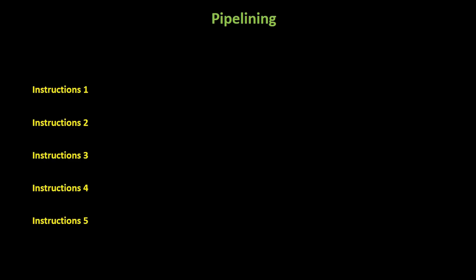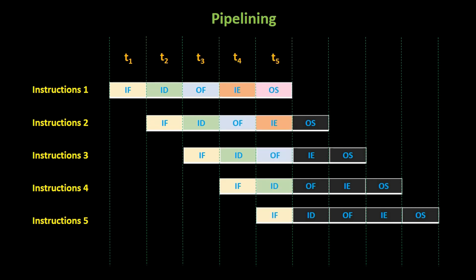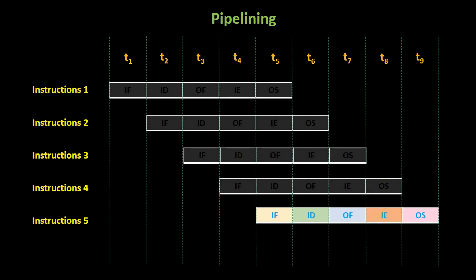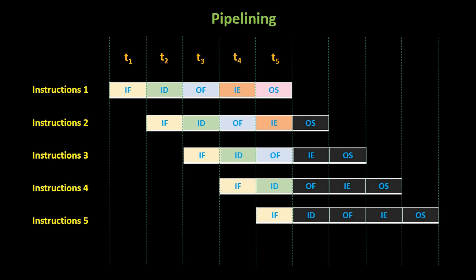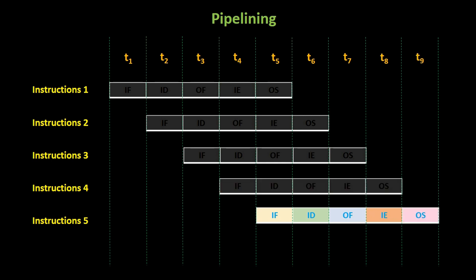Let's consider a scenario where we have five instructions to execute. The first instruction enters the pipeline and begins its execution. It takes five clock cycles to complete all stages of the pipeline. Once the first instruction completes its execution, something interesting happens. In the next clock cycle, the second instruction starts its instruction fetch stage while the first instruction moves to the instruction decode stage. This overlapping of instructions allows the hardware to remain busy and perform operations continuously. However, it's important to note that no two instructions can execute the same stage at the same clock cycle. Each stage must complete its operation before the next stage can begin for a different instruction. As the clock cycles progress, each instruction moves through the pipeline, with new instructions entering and completed instructions exiting. This pipelining technique significantly improves the overall throughput and efficiency of the processor.